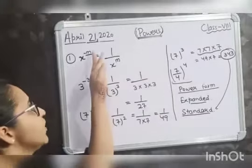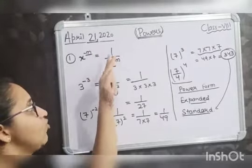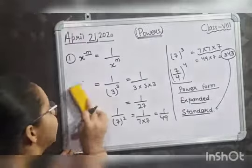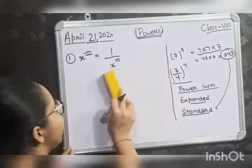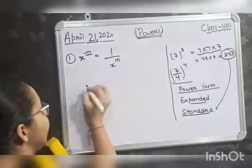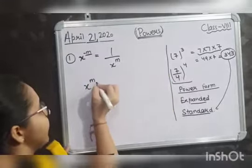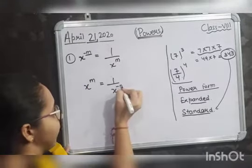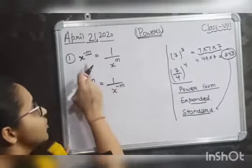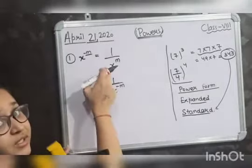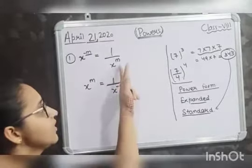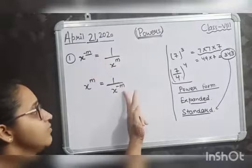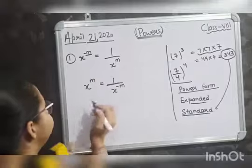So X raised to the power minus m equals 1 upon X raised to the power m. And reversely, X raised to the power m equals 1 upon X raised to the power minus m. It means you are just interchanging their places — X raised to the power m comes to the numerator and X raised to the power minus m goes to the denominator.